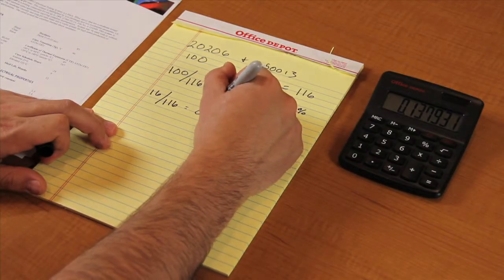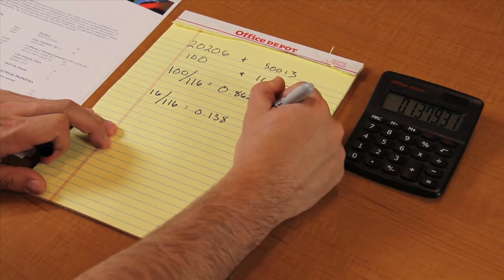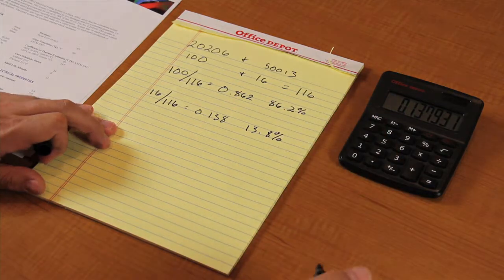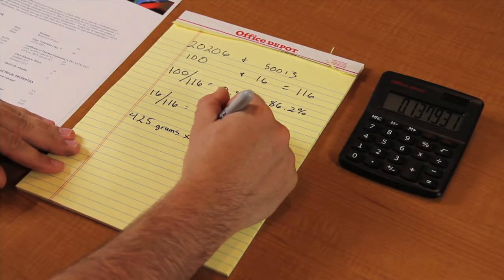The 50013 is 16 out of 116 units. That gives us a percentage of 13.8%. Now let's calculate the amount of material to add.